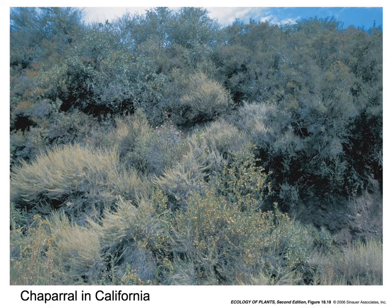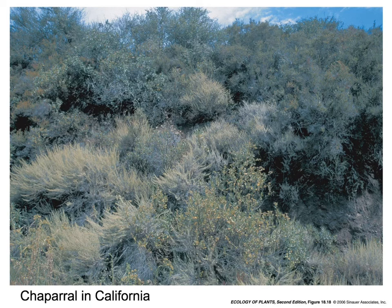A very beautiful and aromatic habitat is the chaparral, with a lot of sclerophyllous — or tough-leaved — shrubs and small trees characteristic of the Mediterranean climate, shown here in California, but also found around the Mediterranean Sea and in parts of Australia.